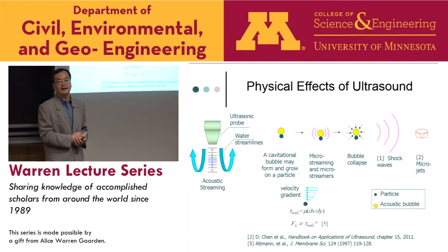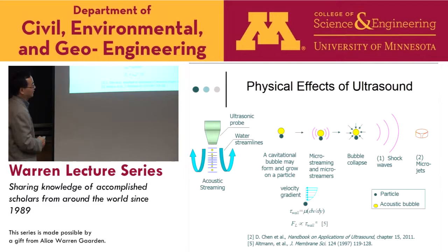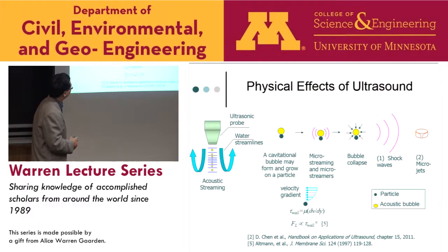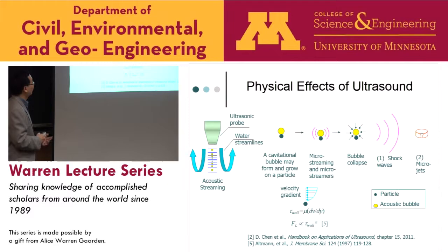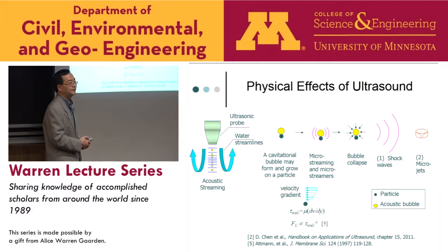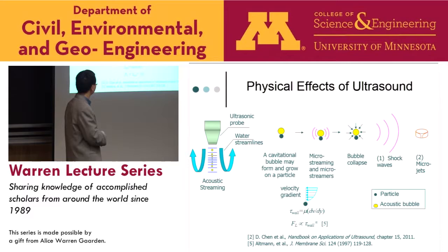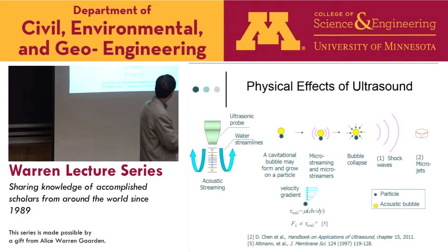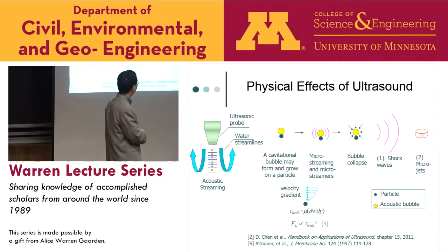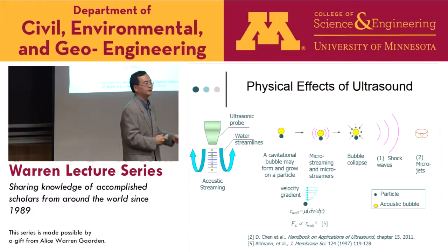Once a cavitational bubble collapses, it generates shock waves with pressure amplitudes as high as one gigapascal. Micro-jets are simultaneously produced from the cavitational collapse with a velocity of about 100 meters per second — small size but high energy density. Overall, ultrasound produces these phenomena leading to highly turbulent flow inside the solution. Ultrasound can therefore be used for cleaning based on these physical effects, and also for desorption due to turbulence — for example, with contaminated soil or sediment to facilitate desorption from the solid phase to the liquid phase.